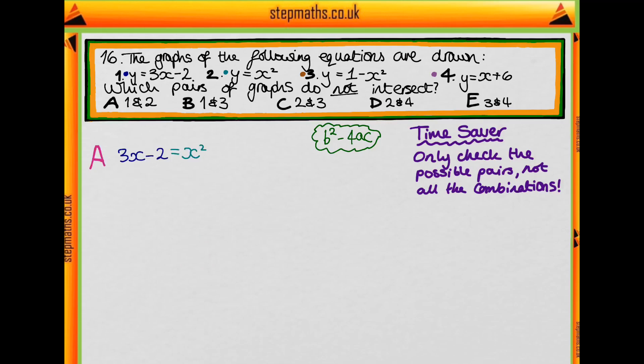Let's first consider A. We have graphs 1 and 2, these two equations. So 3x minus 2 equals x squared when they intersect, which rearranges to 0 equals x squared minus 3x plus 2. We can work out this discriminant where the coefficient of x squared is A, the coefficient of x is B, and the constant term is C. When we substitute these into the formula, we get minus 3 squared minus 4 times 1 times 2, which is greater than zero. So we can rule out A.